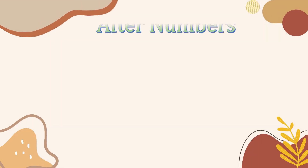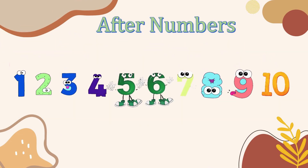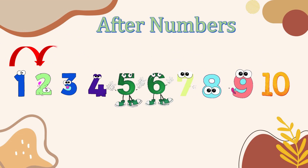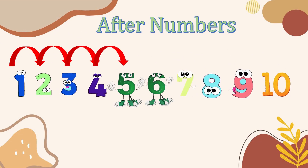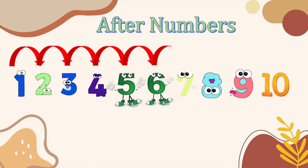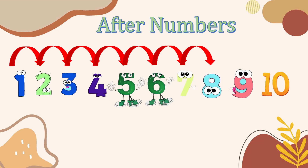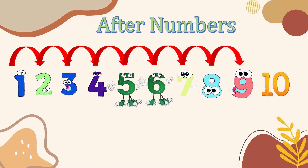Now we will start with after numbers. After numbers is a number that we should move forward or towards right. After 1 there is 2, after 2 there is 3, after 3 there is 4, after 6 there is 7, and so on. You have to move always towards right to find the after numbers.